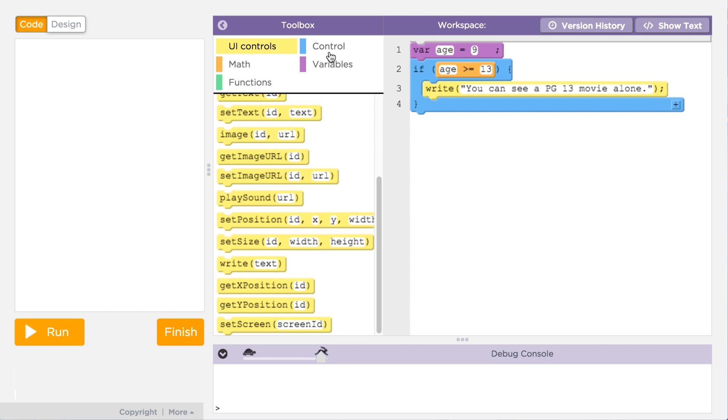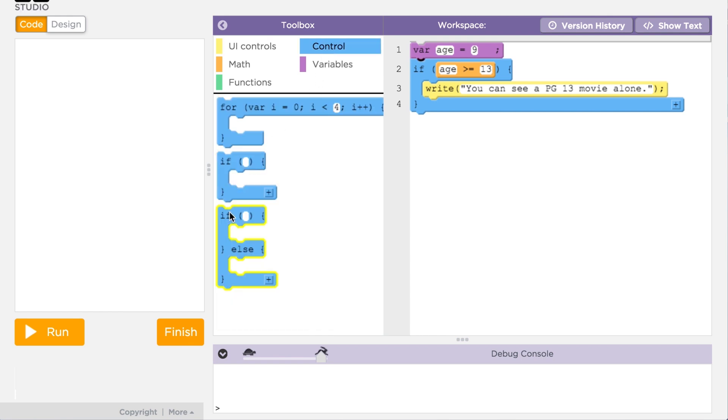In App Lab, you can add an else statement by either dragging out the if-else block or by clicking the plus symbol in the bottom right corner of the if block.